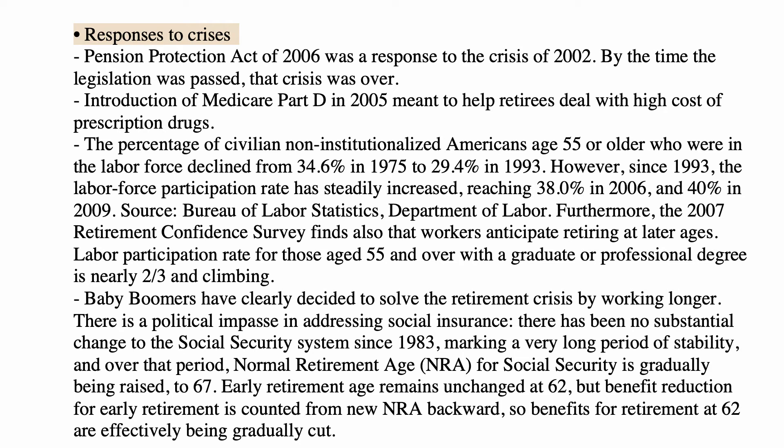Increasingly, elderly workers choose to continue working. Labor participation rates for those age 55 and over with a graduate professional degree are nearly two-thirds and climbing — which is actually a solution to the problem. Baby boomers need retirement money but are working instead of retiring. The speaker calls this the Copernicus model of retirement: Copernicus never retired and was working on the final corrections of his book De Revolutionibus Orbium Coelestium when he died.